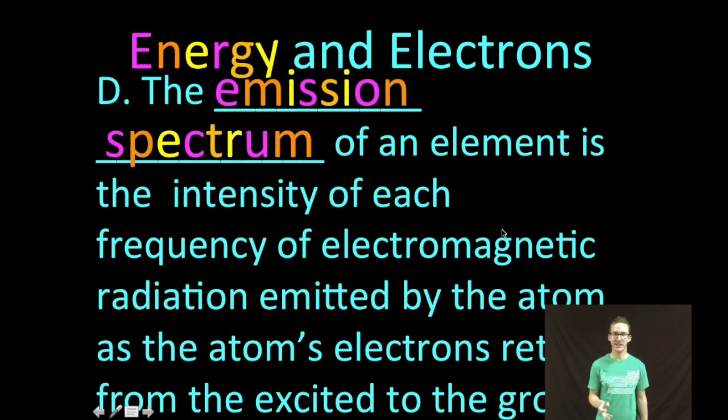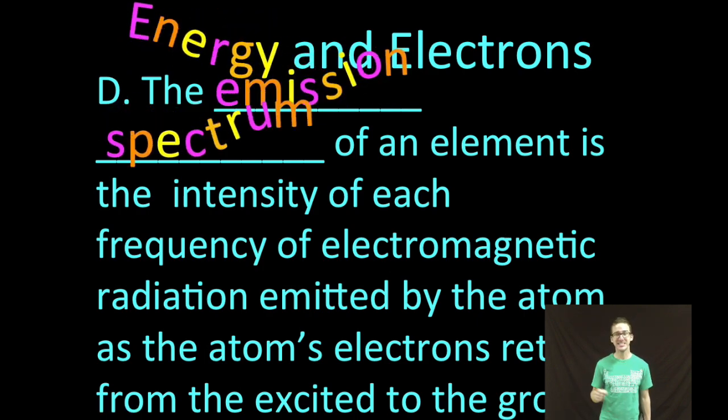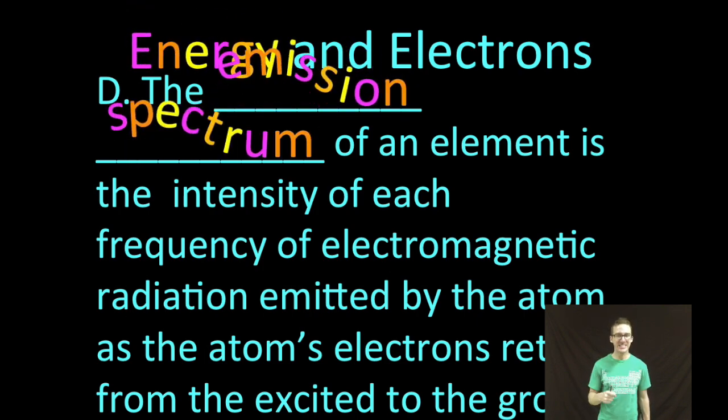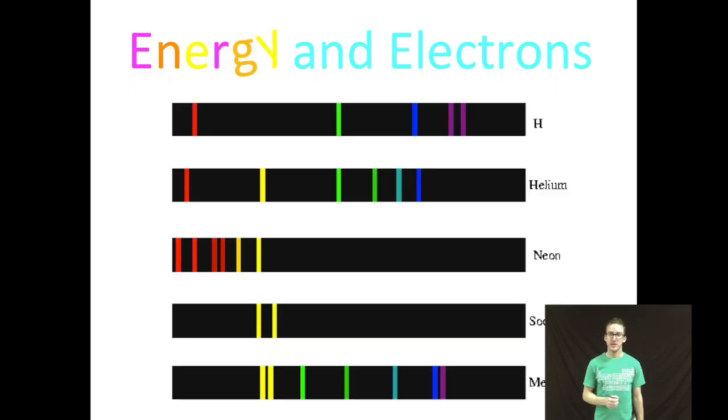As we finish up here, you should recognize that the emission spectrum of an element is the intensity of each frequency of electromagnetic radiation emitted by the atom as the atom's electrons return from the excited to the ground state. And so as you look at your screen, the emission spectra of different elements are shown. You don't see the entire spectrum of visible light because the electrons can only exist in specific energy levels.